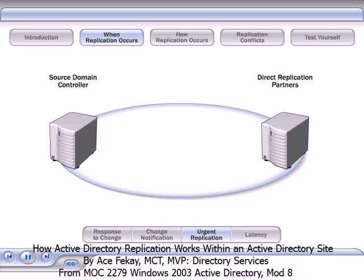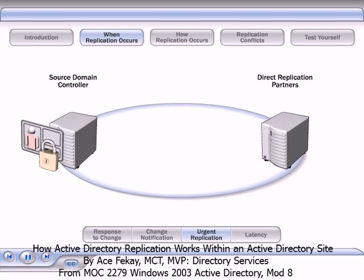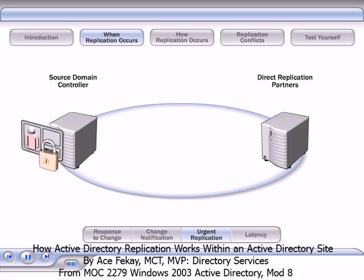Attribute updates that are security sensitive do not wait the default 15 seconds. Instead, they trigger an immediate change notification. This process is called urgent replication. For example, urgent replication occurs when an administrator locks out an account. Although a specific update triggers the change notification during urgent replication, when the replication partner requests changes, all new changes are replicated, not just the security sensitive change.